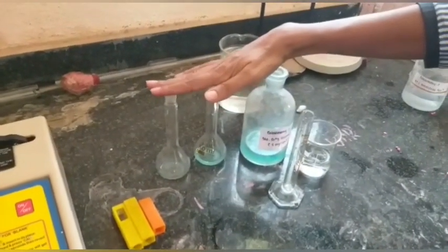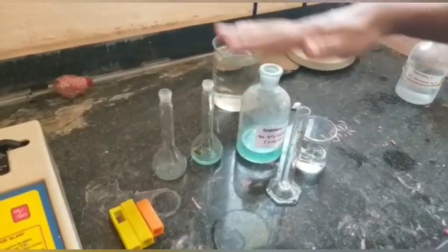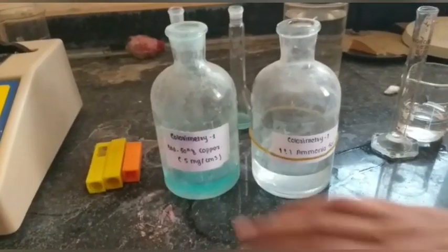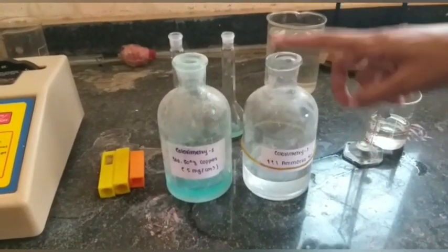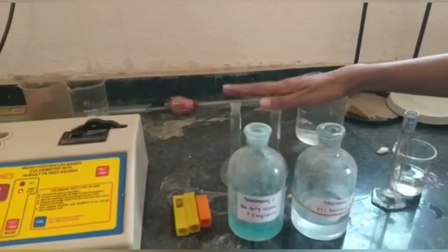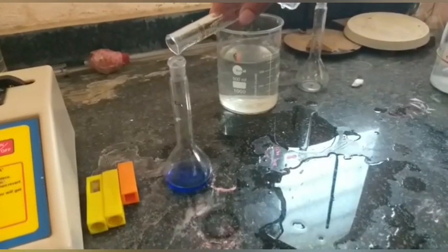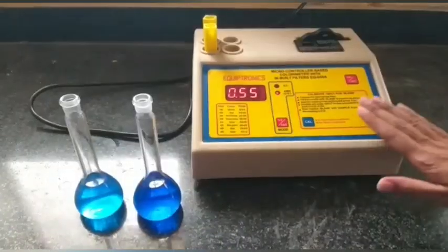These two bottles are 50 centimeter volumetric flasks and this is a measuring cylinder. We need copper sulfate solution and 1:1 ammonia. First of all, in 50 ml we have to put 5 ml of 1:1 ammonia.